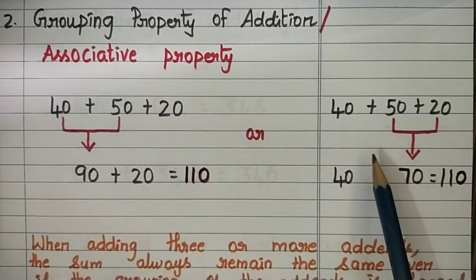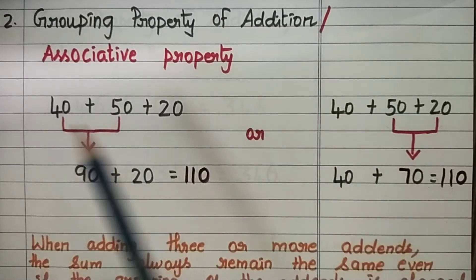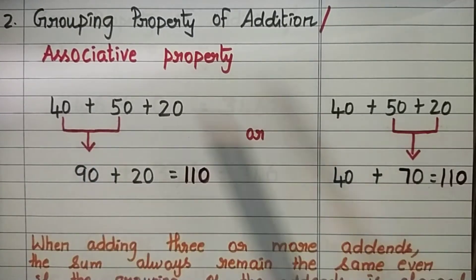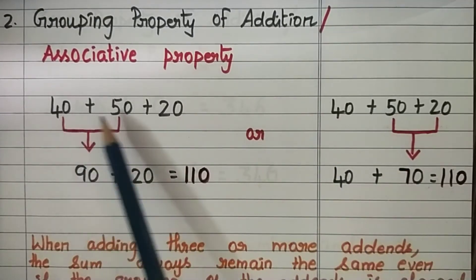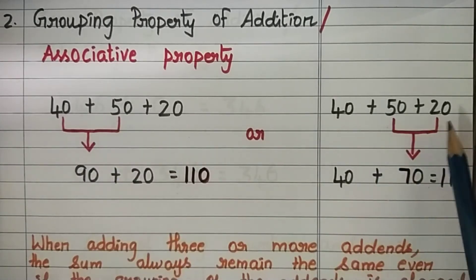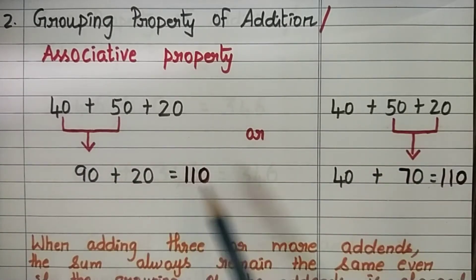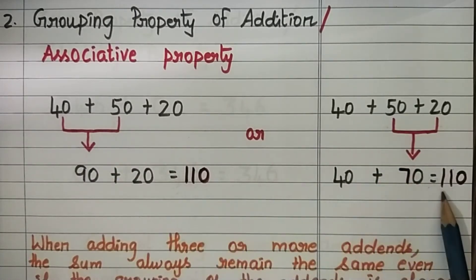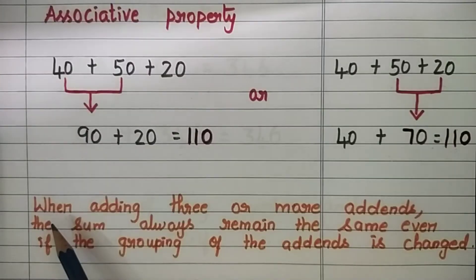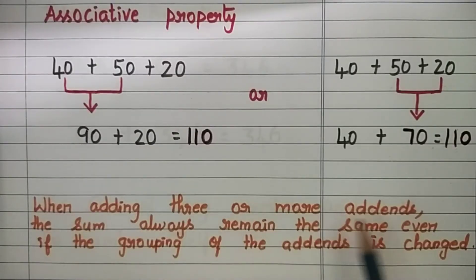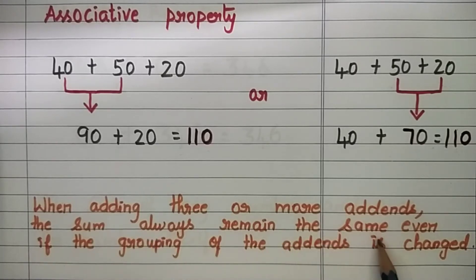Children, from this we can understand: when adding three or more addends, we can add any two numbers first — the first two addends or the last two addends. The sum never changes; it remains the same. Hence, we conclude: when adding three or more addends, the sum always remains the same even if the grouping of the addends is changed.